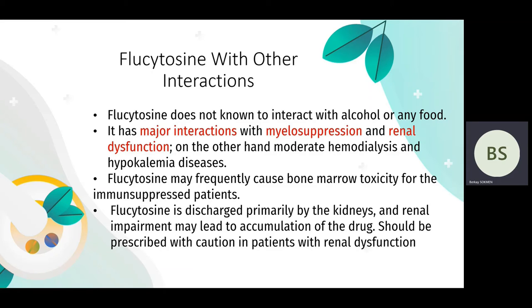Flucytosine does not interact with alcohol or any food. It has major interactions with myelosuppression and renal dysfunction diseases. On the other hand, it moderates hemodialysis and hypokalemia diseases. Flucytosine may frequently cause bone marrow toxicity in immunosuppressed patients. It is discharged primarily by the kidneys, and renal impairment may lead to drug accumulation. It should be prescribed with caution in patients with renal dysfunction.